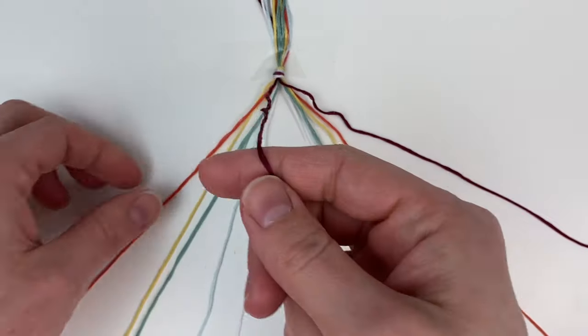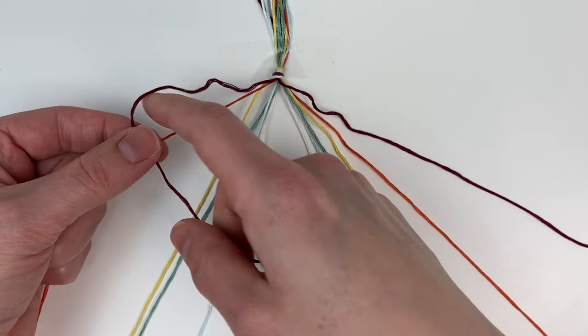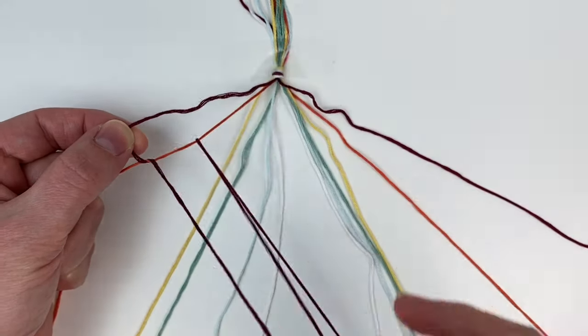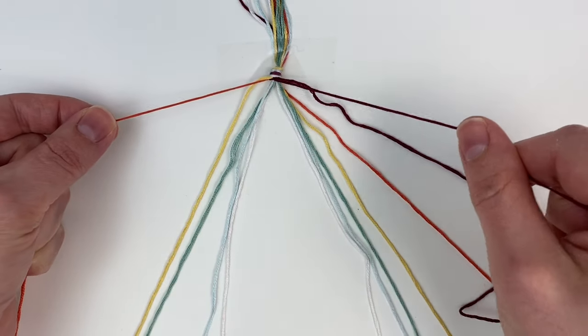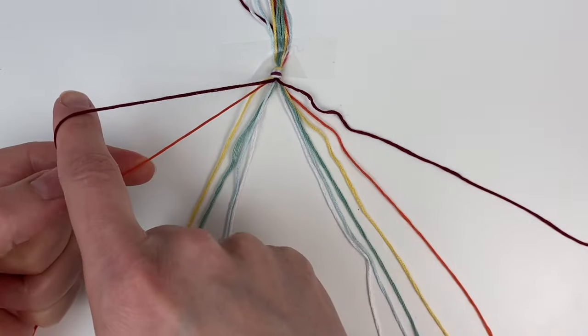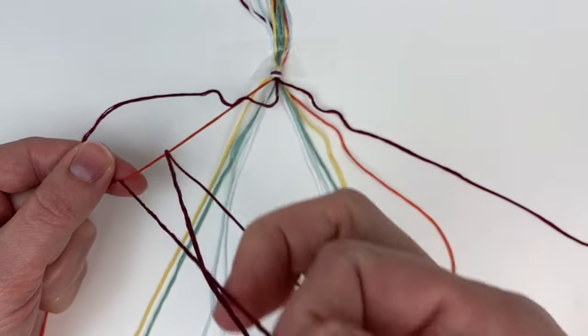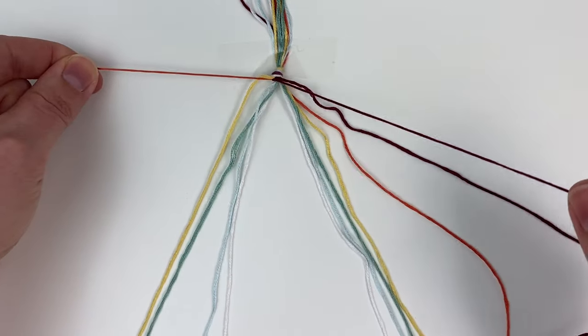You're going to grab the furthest cord on the left and you're going to hold it over the next cord in the shape of a four, and then you're going to push that end down underneath and through the loop and pull it through and tighten it up. Then you're going to repeat that same thing, making the four shape, pushing the end under and through the loop and tightening it as well. And that is your first forward knot.